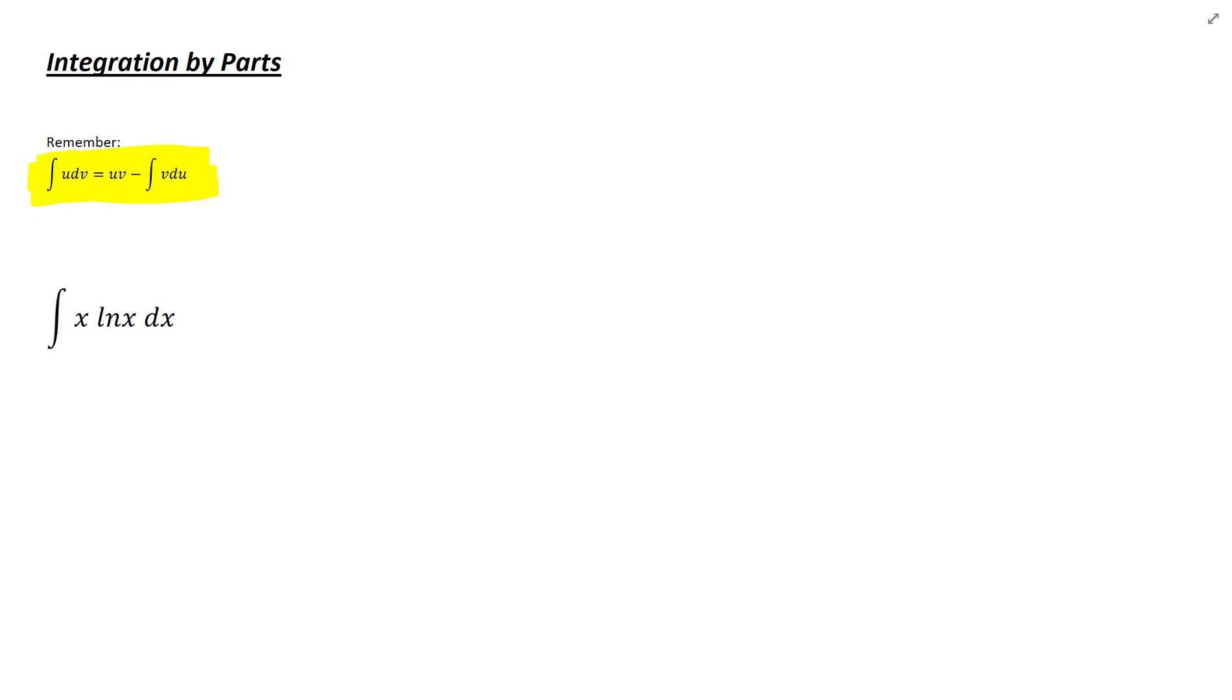We have integral of x ln x dx. In this case let's say u equals ln x and dv equals x dx. So basically out of these two, x ln x, I used ln x to set it equal to u and I used x dx to say that's my dv.